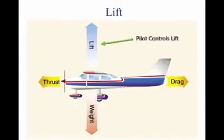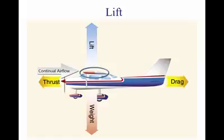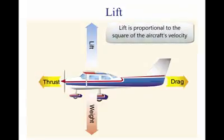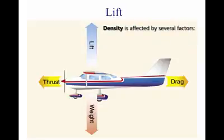The pilot is able to control lift. If the control yoke is pushed forward or pulled back, the angle of attack changes and therefore the amount of lift changes as well. For an aircraft to continue to produce lift, the airfoil must be continually attacking new air. On helicopters, this is accomplished by the rotating blades; in a fixed-wing airplane, this is accomplished by the airflow over the wing. The lift provided from the wing is proportional to the square of the aircraft's velocity. Lift and drag also vary directly with the density of the air. Density is affected by several factors — pressure, temperature, and humidity.